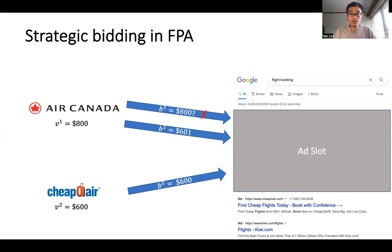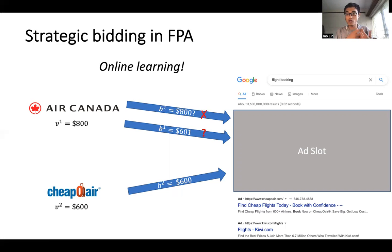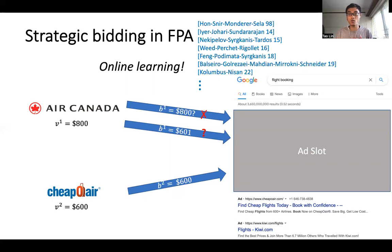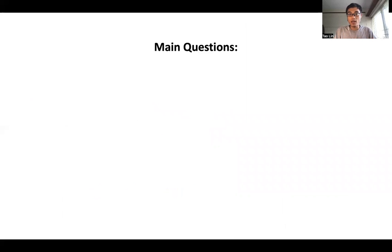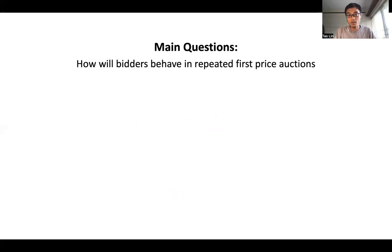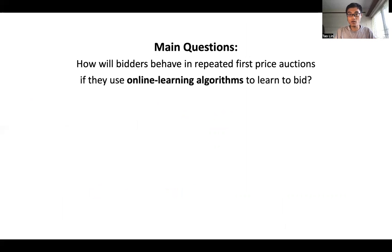The problem in reality is that bidders never see the bids or values of other bidders. If they cannot see the values or bids of others, how should they bid? Actually, they can do online learning — they can try different bids to see which is best. They can do this because internet advertising auctions are repeated auctions, and bidders can use automated bidding algorithms to do online learning. The idea of using online learning in first price auctions was studied even in the 90s.